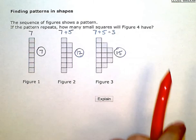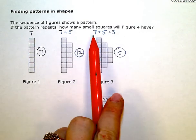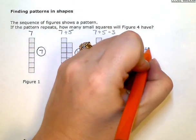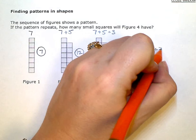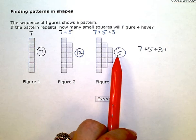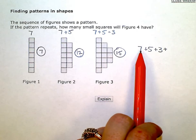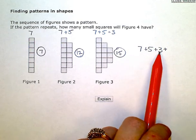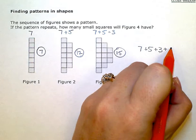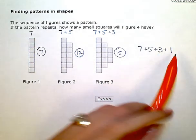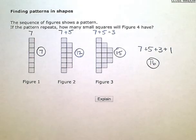For figure 4, I know I'm going to have 7 plus 5 plus 3 plus an additional amount of squares. Each row has been going down by 2 — 7 squares, 5 squares, 3 squares. If we go down by 2 squares again, our last row will have 1 square. And 7 plus 5 plus 3 plus 1 gives us 16 total squares in figure 4.